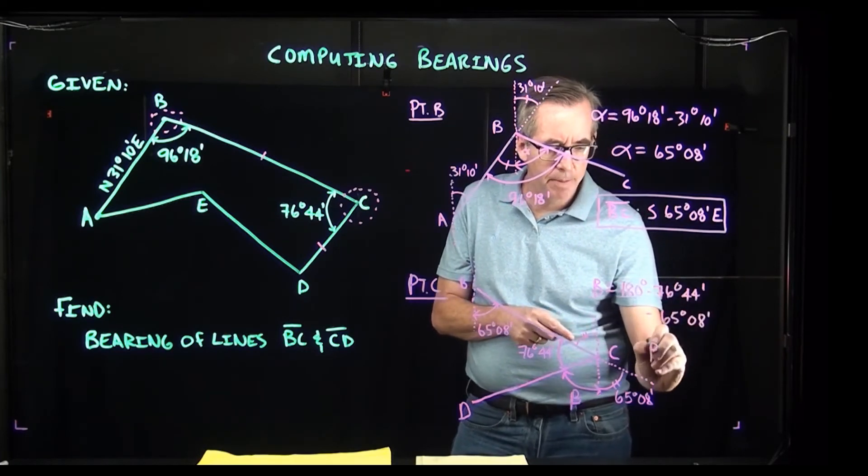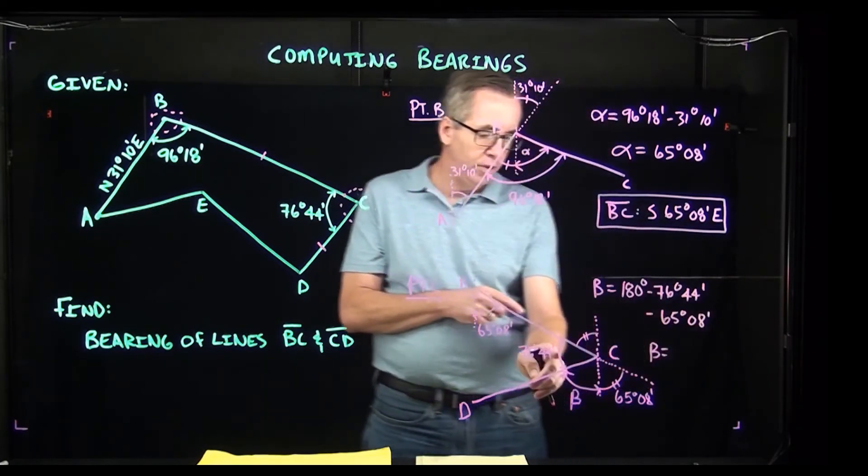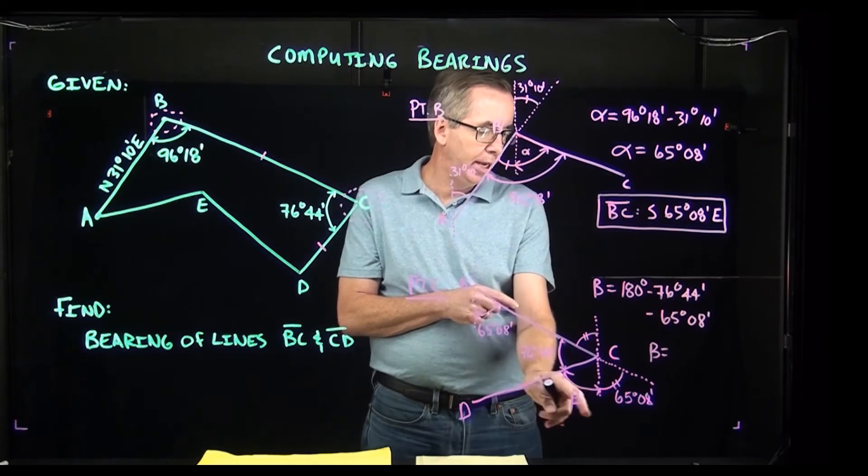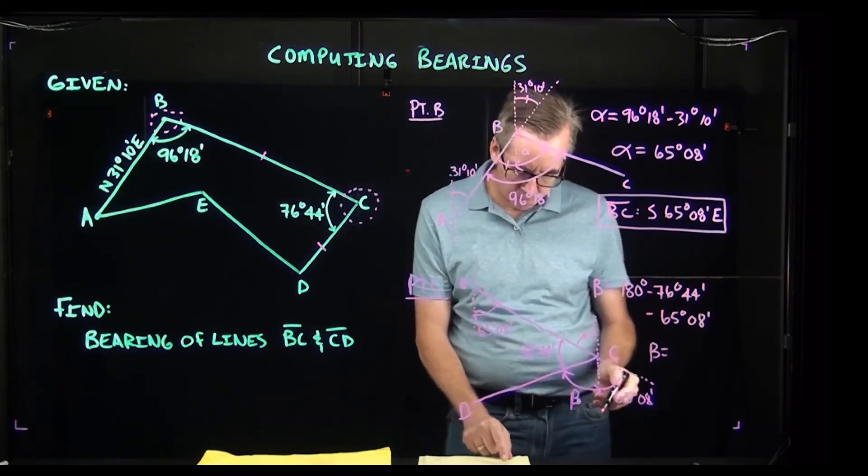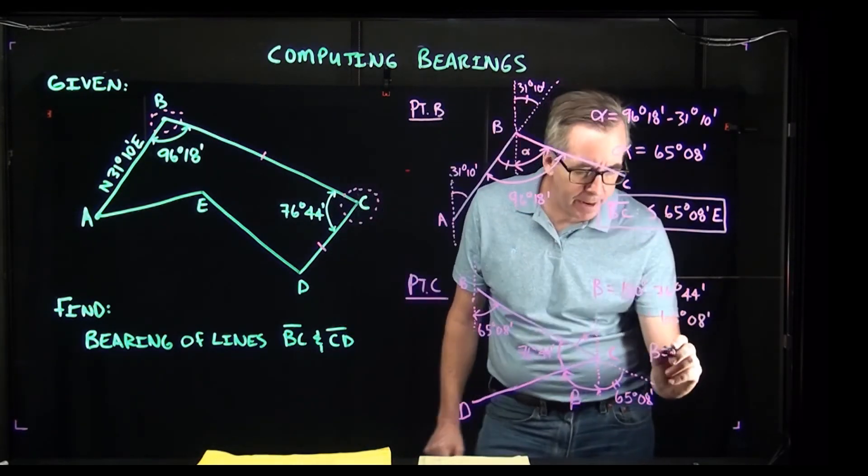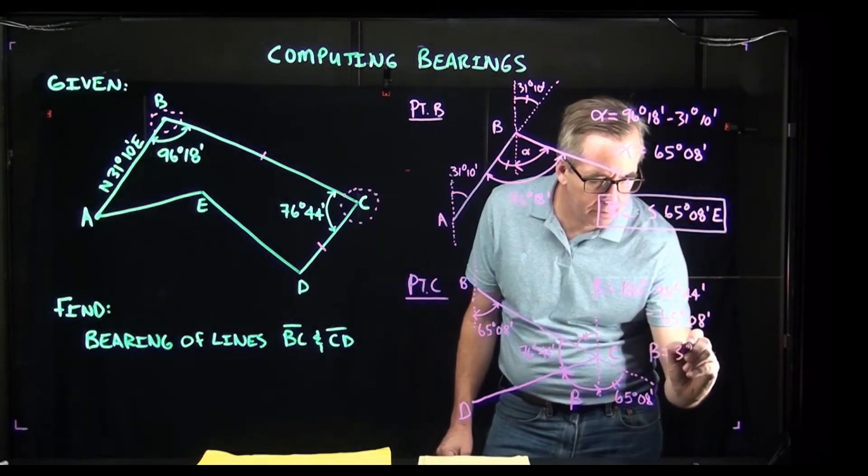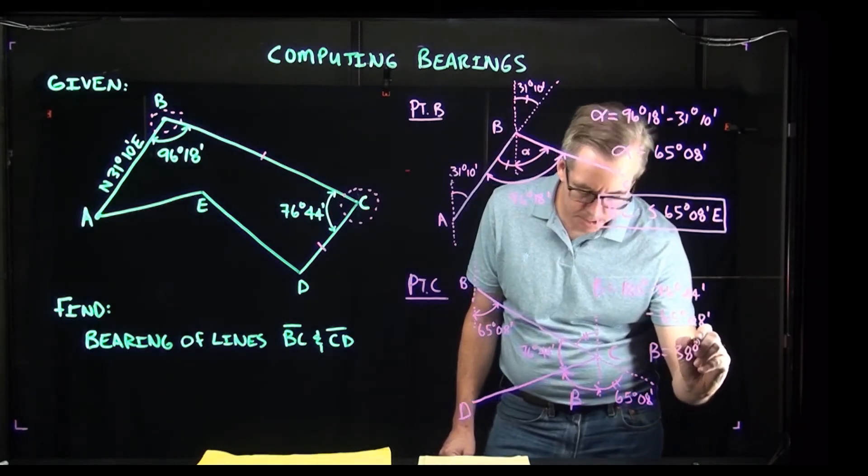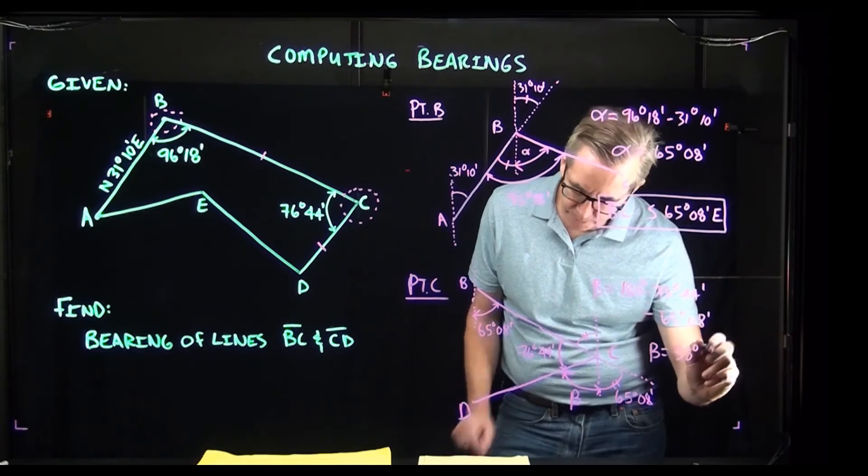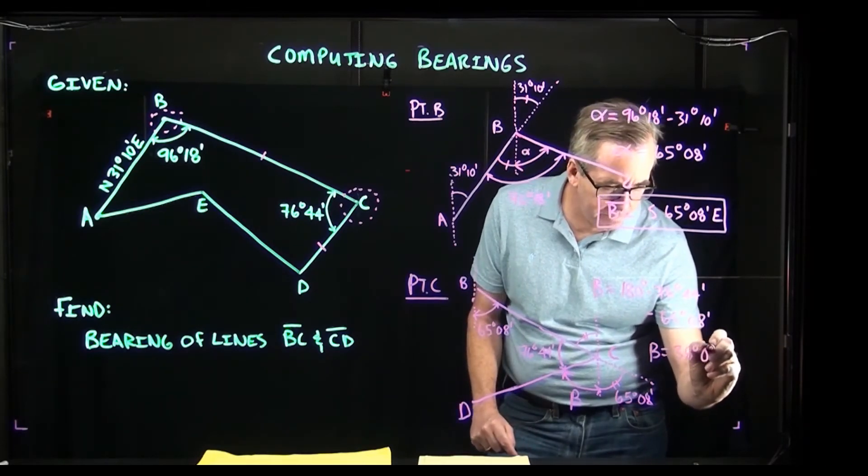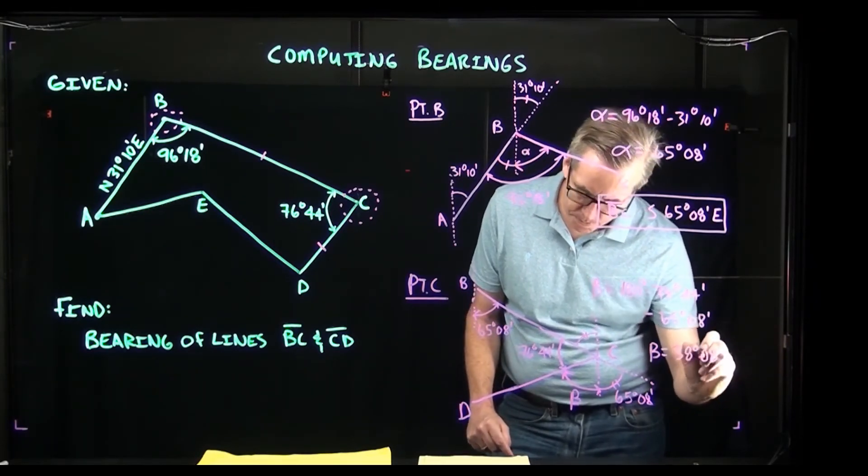Beta will be, so these three angles together have to equal 180, so beta is going to be the difference between 180 and those two. And this gives me a value of beta of 38 degrees, and I'm taking a look at here, 08 minutes.